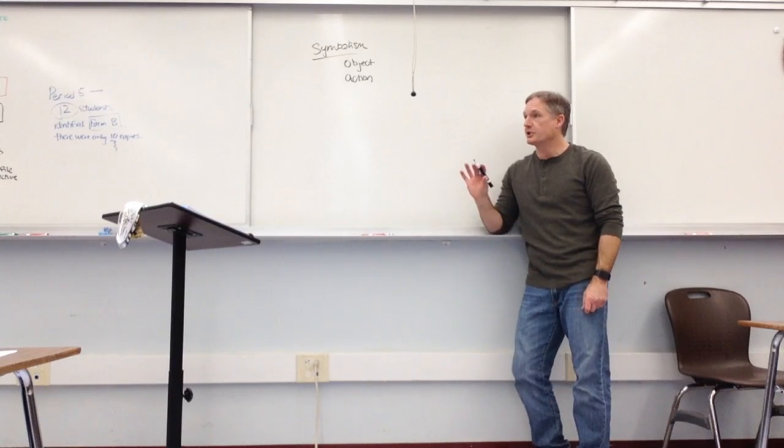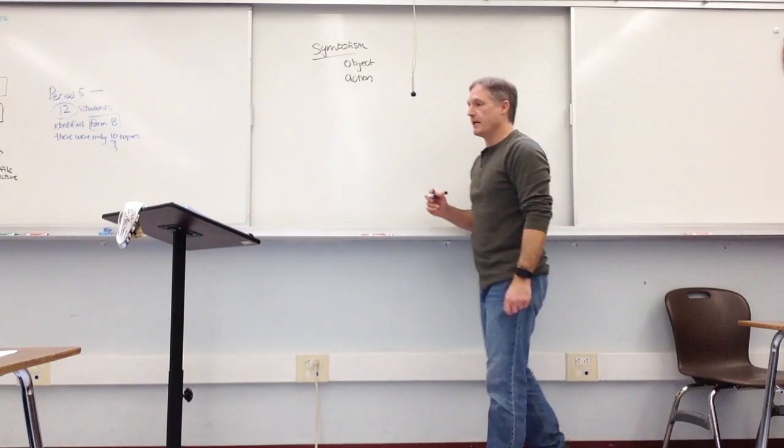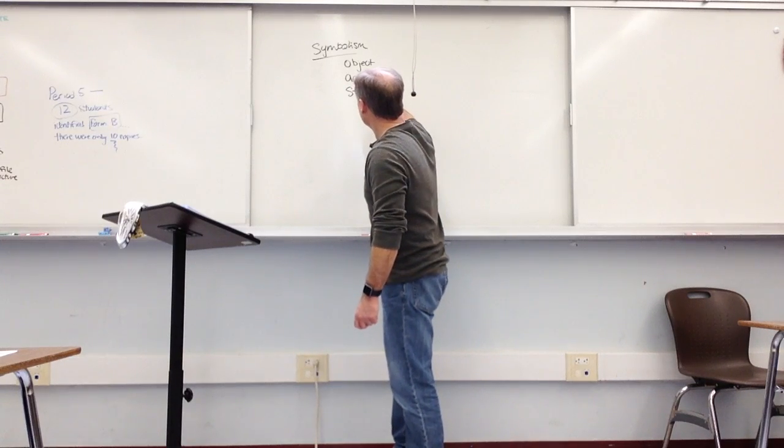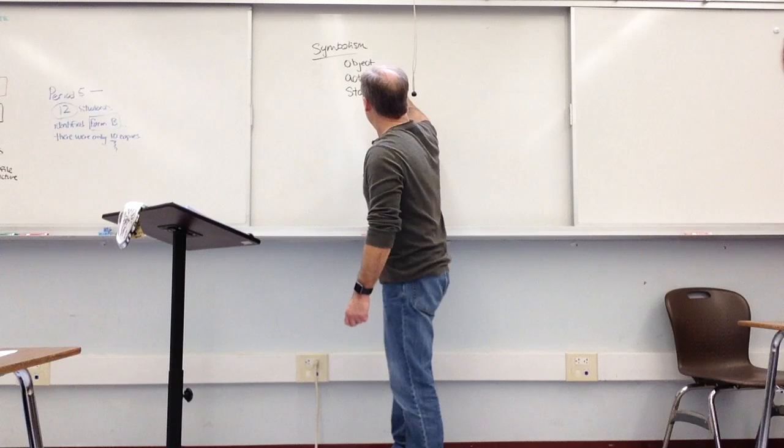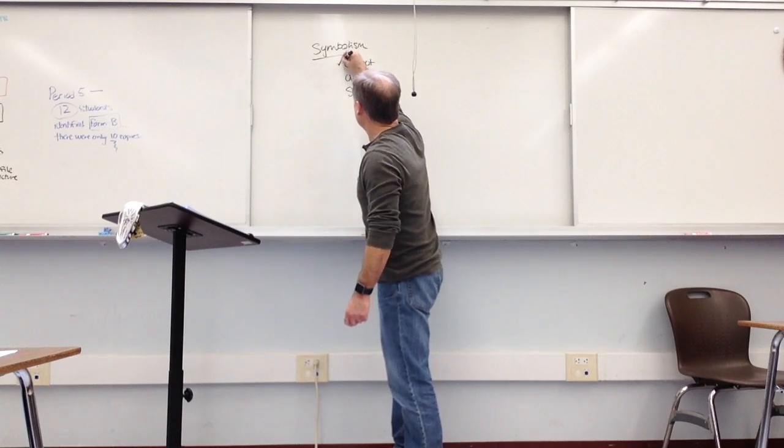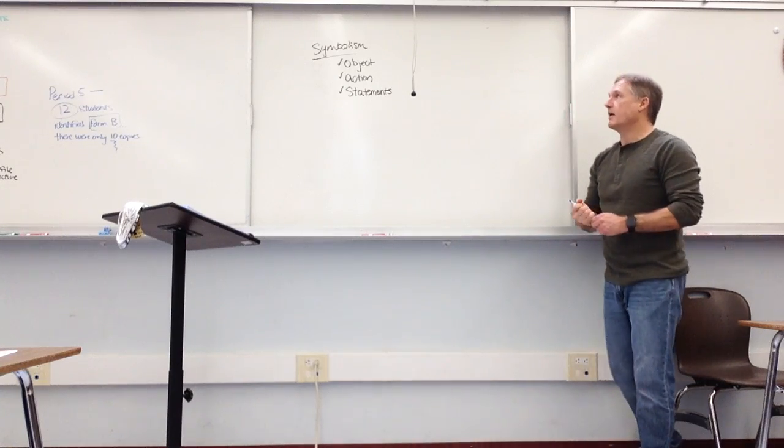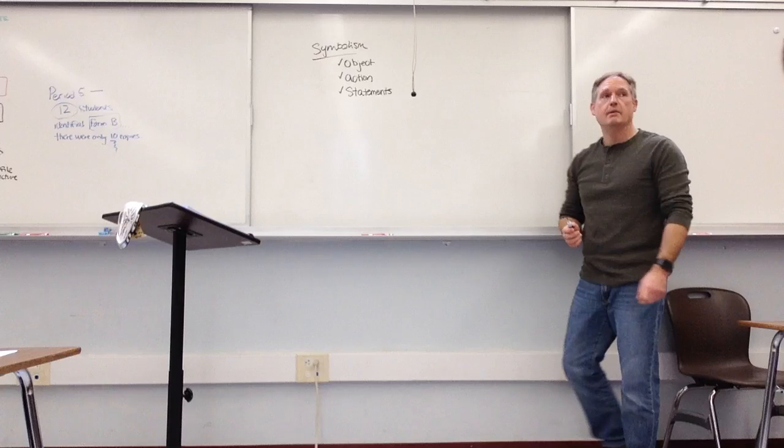And then we also have speech as well. In other words, things that we say. So we'll call them statements, symbolic statements. And these are things that we'll say that actually represent something else. So we're looking at these three things: symbolic objects, symbolic action, and symbolic statements.